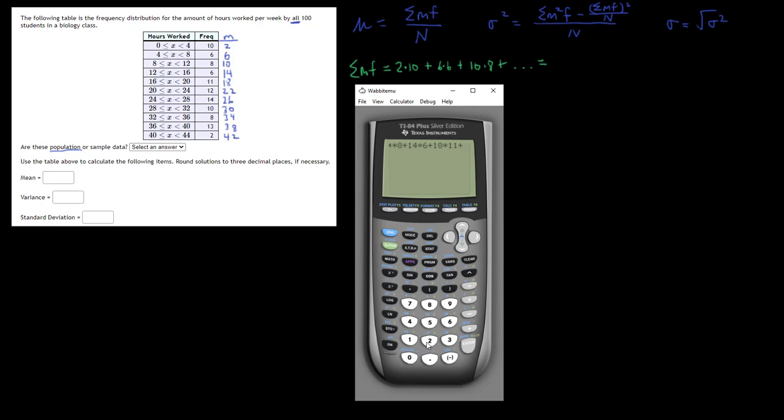26 times 14 plus, 30 times 10 plus, 34 times 8 plus, 38 times 13 plus finally 42 times 2. So this is the sum of all of the M times F pairs. Looks like 2,196.